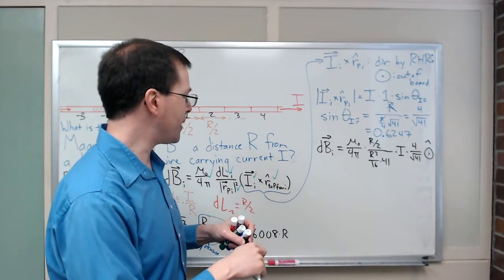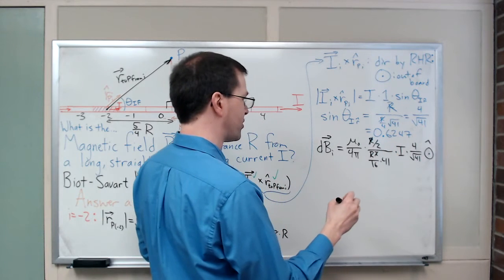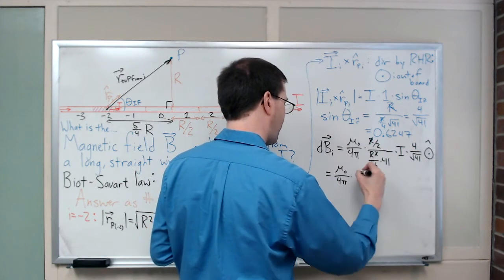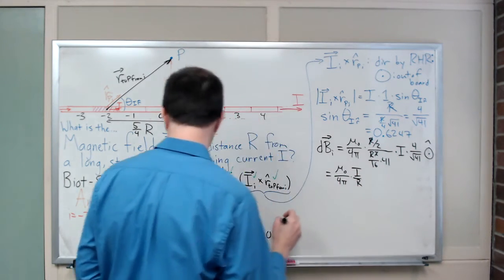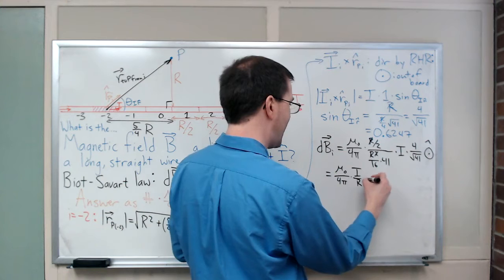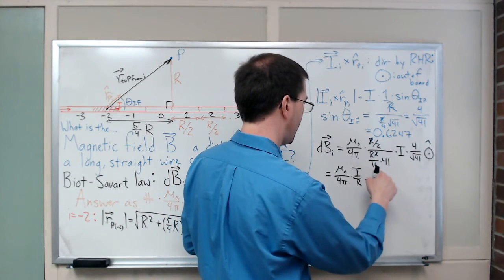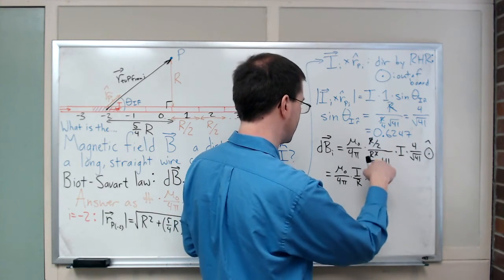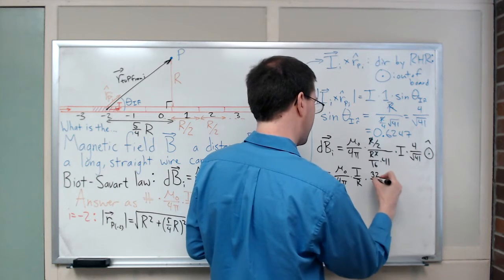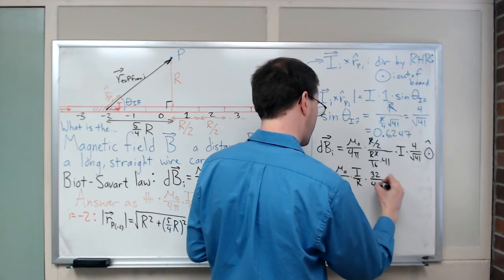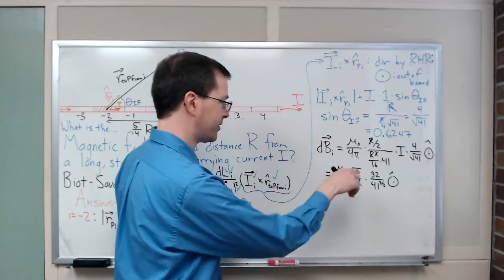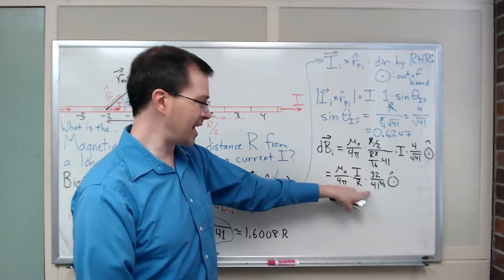One factor of R cancels with the squared there, so I can rewrite this as mu naught over 4 pi times I over R. That's what I wanted to write it in terms of, that was my goal, to write this in terms of the constants and given values of the problem. That times what's all this mess? Multiply by 16 over 16, that gives me 8 times 4, so 32 divided by 41 times the square root of 41 is 41 to the 3 halves power. And out of the board hat, whatever that is. I guess that's my answer.